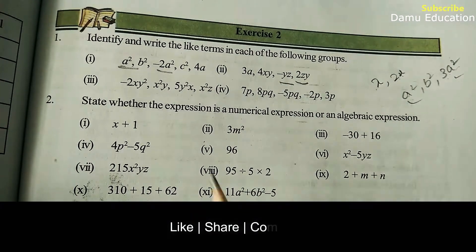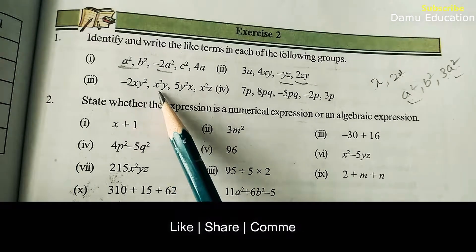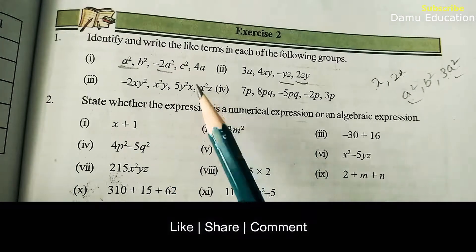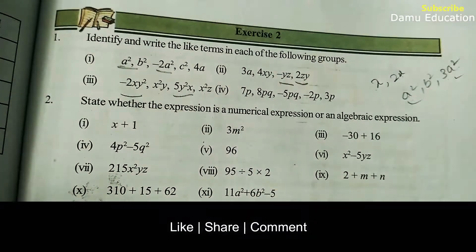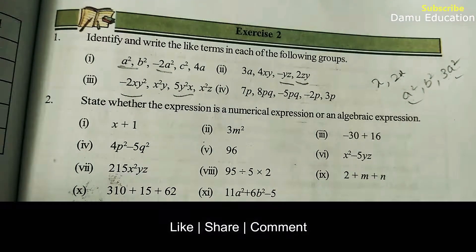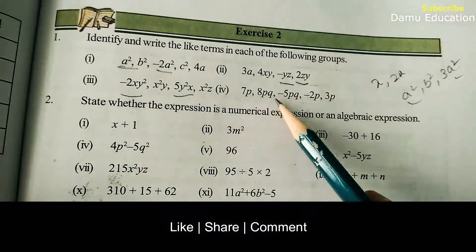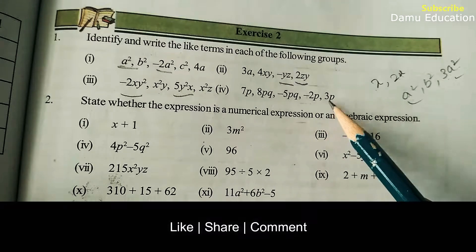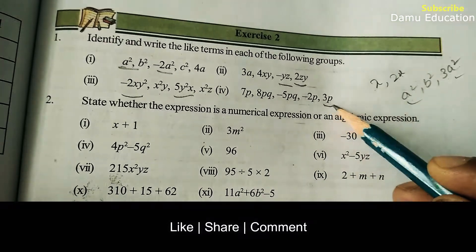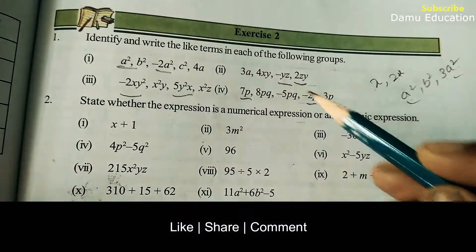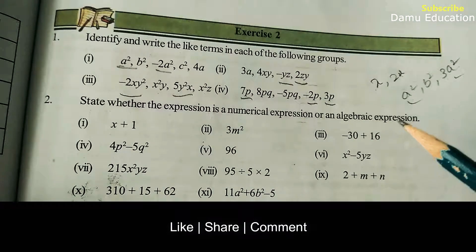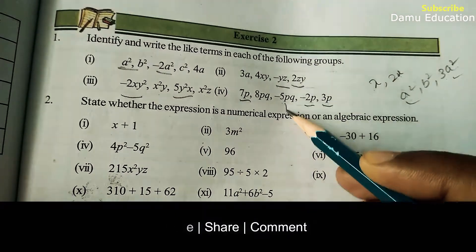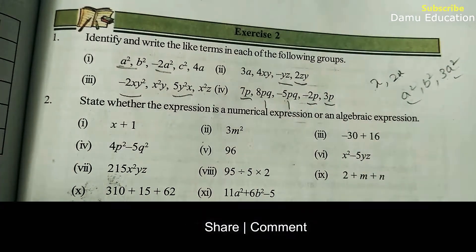Next, minus 2xy square is there and x square y is there and y square x and x square z. So minus 2xy square and 5y square x are like terms. Then: 7p, 8pq, minus 5pq, minus 2p, and 3p — so 3p, minus 2p, and 7p are one set of like terms, and minus 5pq and 8pq are another pair of like terms.